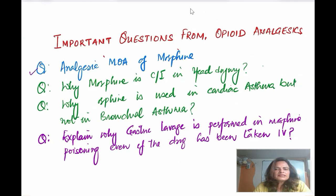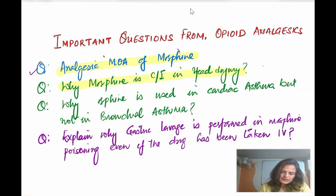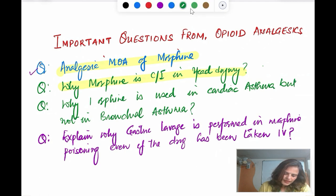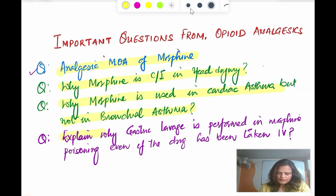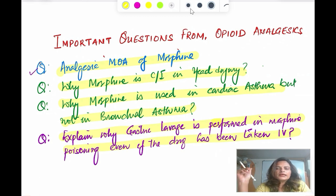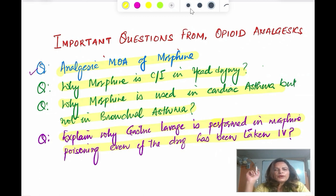The first question is the analgesic mechanism of action of morphine. The second one is a reasoning question: explain why morphine is contraindicated in head injury. The third is explain why morphine is used in cardiac asthma but contraindicated in bronchial asthma. The fourth question is explain why gastric lavage is performed in morphine poisoning even if the drug has been taken intravenously. For the first question I have already posted a video — a link will be in the description box. Question number two I will be covering in today's video.